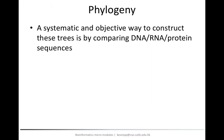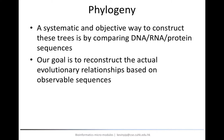In bioinformatics, one way to deal with this problem is, instead of using these features, we use the similarity between DNA, RNA, or protein sequences to objectively and systematically infer phylogenetic trees. Our goal is to reconstruct phylogenetic trees that are as close to the actual evolutionary history as possible. We use the term reconstruction because we are not defining evolutionary relationships between species or strains, but rather inferring relationships that have already been defined in history.